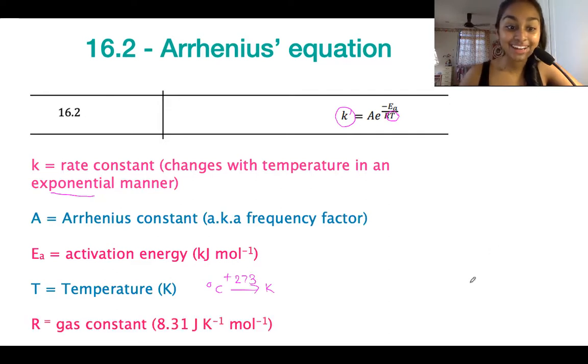And last but not least, R is your gas constant, so also available in your data booklet from section 2, so it's going to be 8.31. So this is Arrhenius' constant.